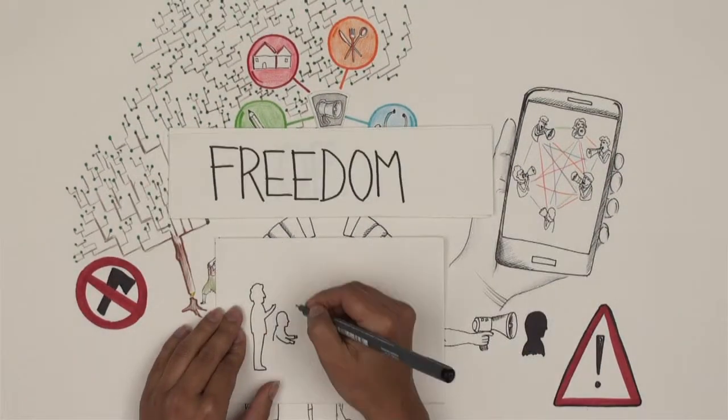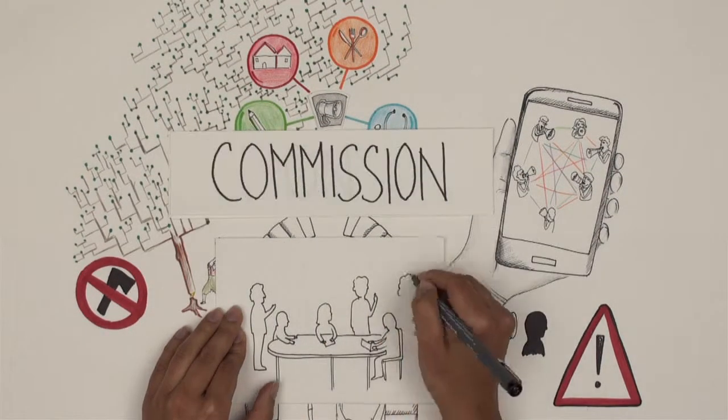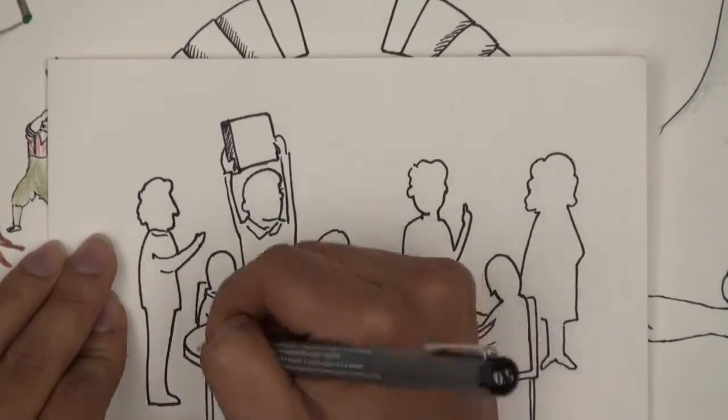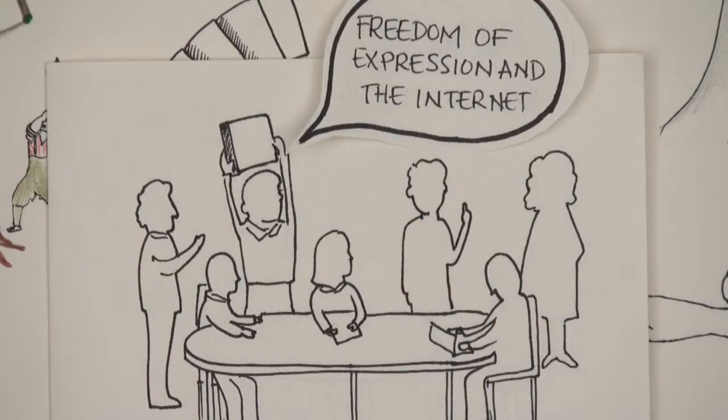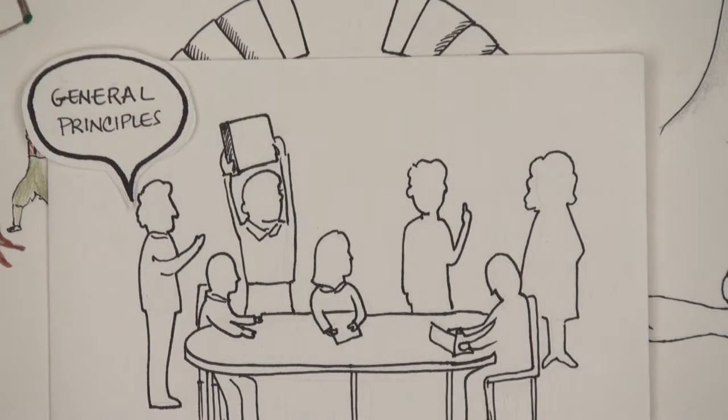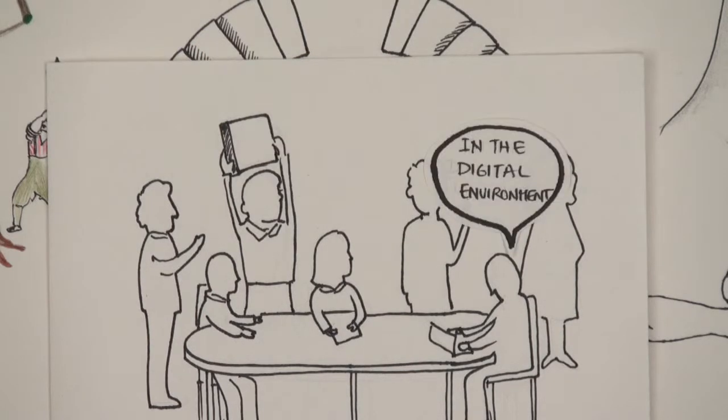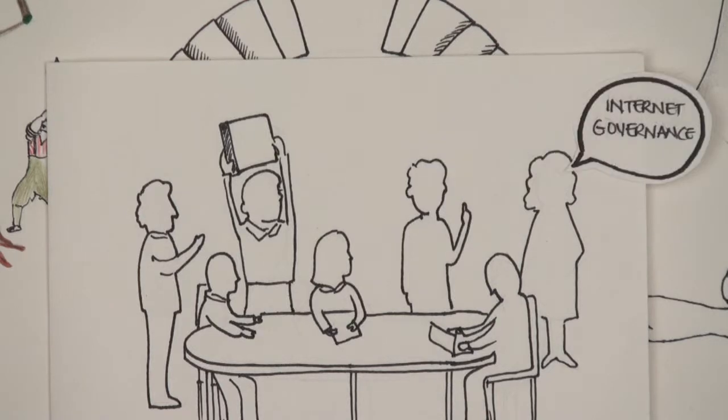The Special Rapporteur for Freedom of Expression of the Inter-American Commission on Human Rights issued a report called Freedom of Expression and the Internet, a document that explains the general principles and criteria to resolve conflicts of rights in the digital environment. Broadly speaking, this document concerns the issue of Internet governance.